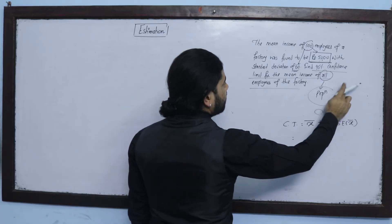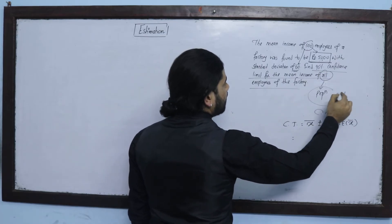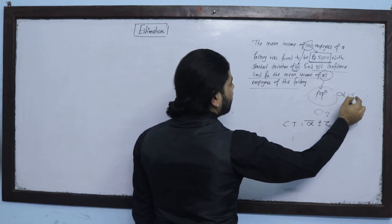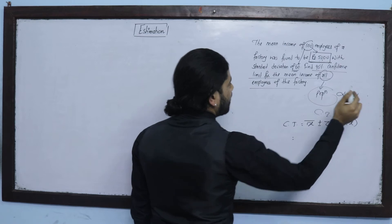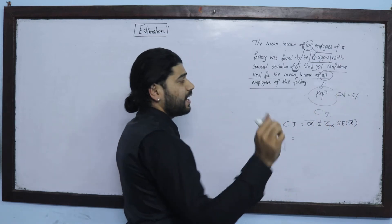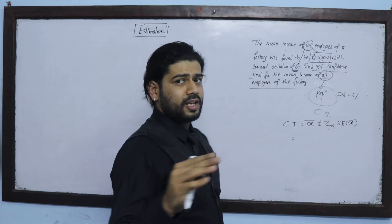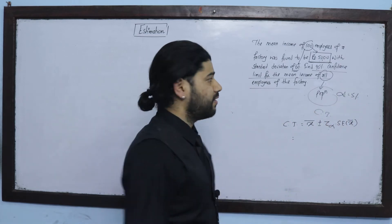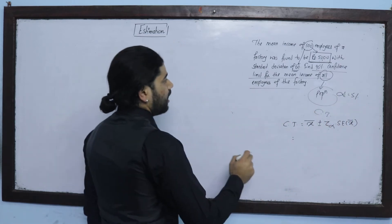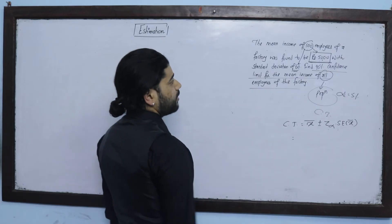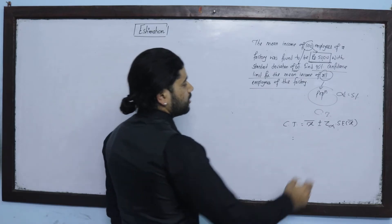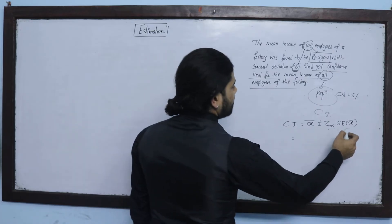Confidence level is 95%, level of significance is 5% — that is, total 100%, 95% confidence, 5% risk, which is the level of significance alpha.